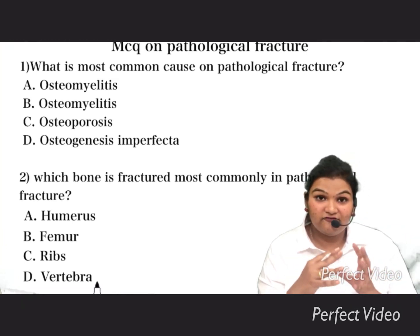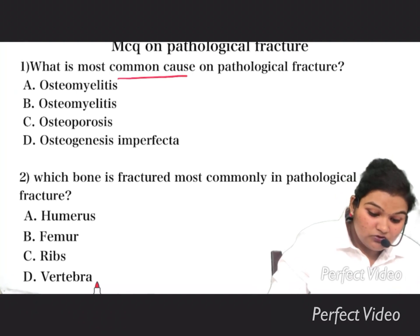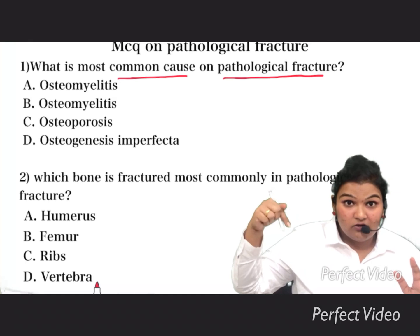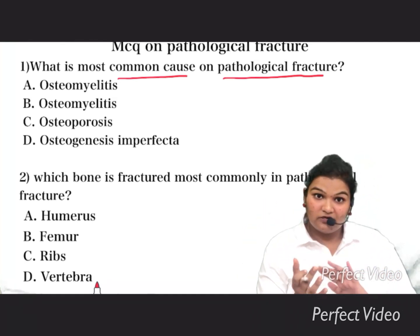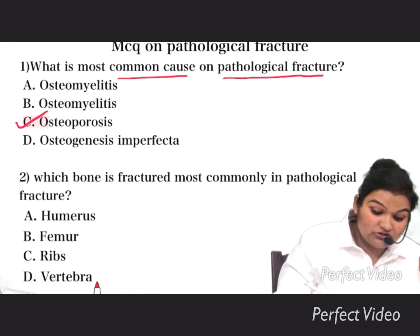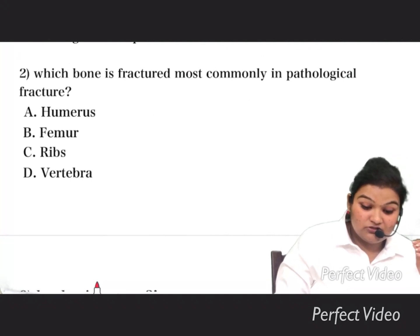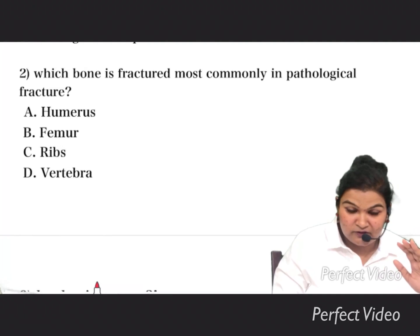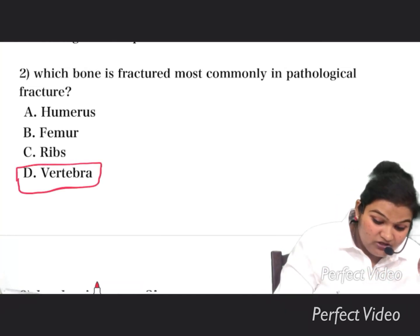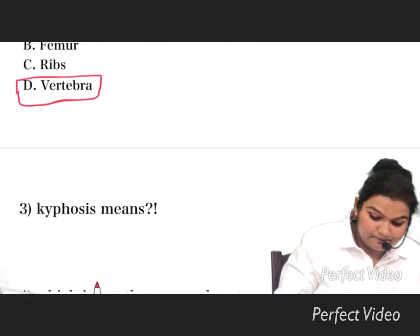Now let us move to MCQs on pathological fractures, covering some left-out points. First question: what is the most common cause of pathological fracture? The answer is osteoporosis (option C). Second question: which bone is most commonly fractured in pathological fracture? This was not covered in the lecture — the answer is the vertebrae.